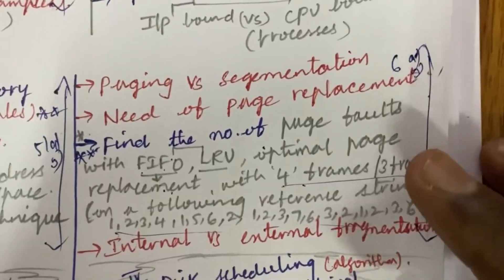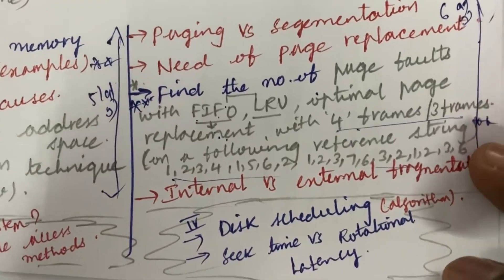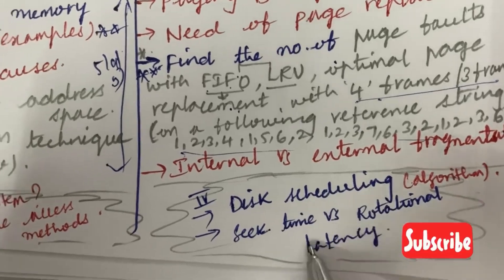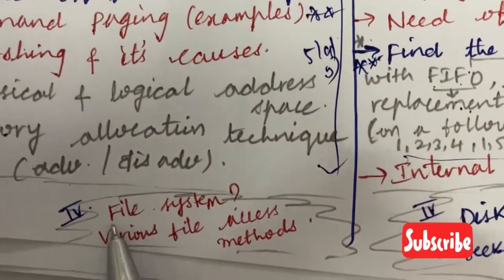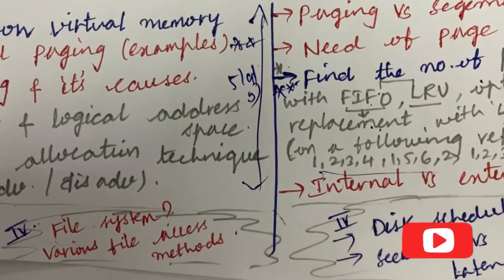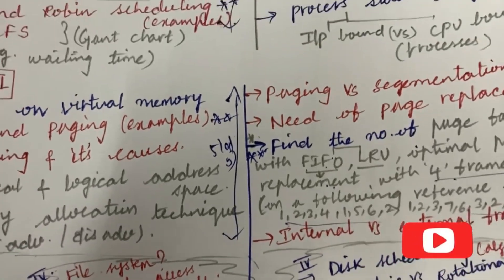In the fourth unit, the seventh question is all about disc scheduling and its algorithm, seek time versus rotational latency, as well as the file system and the various file access methods. You can work out these to get the seventh question. I have covered all the eight questions from this Operating Systems which benefits you all to work out.